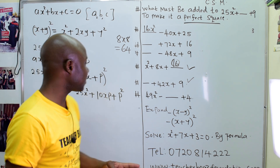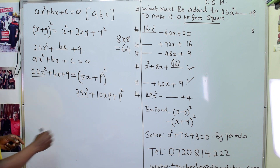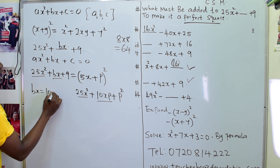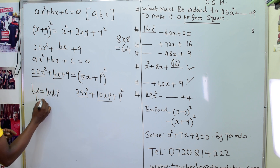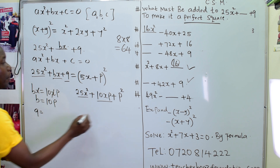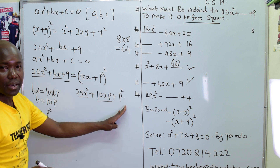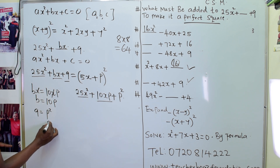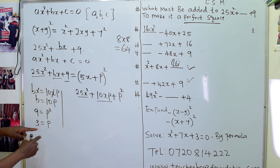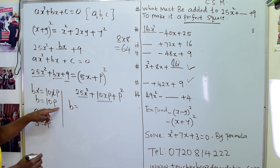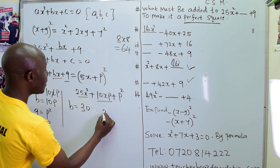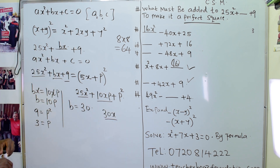Then we compare coefficients. The 25 compares to the first 25. The 10xp compares with bx — x cancels, so b equals 10p. Then comparing last parts: p squared equals 9, so p equals 3. Since b equals 10p, that gives b equals 10 times 3, which is 30. So the missing term is 30x.